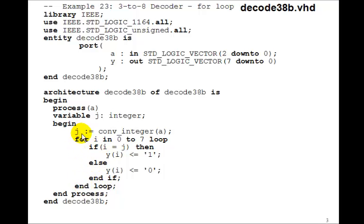Then in this for loop, we can just say for i in 0 to 7 loop, if i equals j, which really means if i is equal to a, then y(i) gets 1, else it gets 0. So this should produce a 3-to-8 decoder.